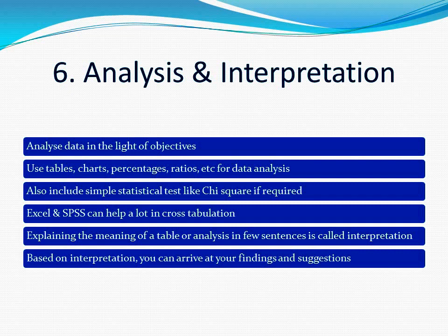Excel, SPSS, etc. can help you a lot in analysis, including cross-tabulation. Cross-tabulation means preparing a table based on more than one variable at a time — for example, classifying the population on the basis of gender is one-way classification, while classifying based on gender as well as education is two-way classification, which is called cross-tabulation. After analysis, every analysis should be followed by interpretation — explaining the meaning of a table or analysis in a few sentences. Based on interpretation, you can arrive at your findings and suggestions.